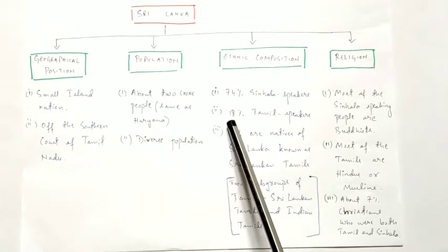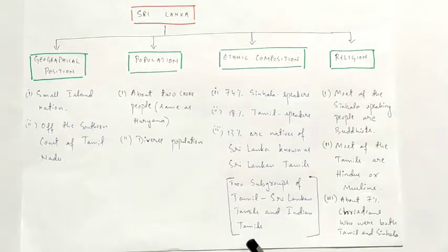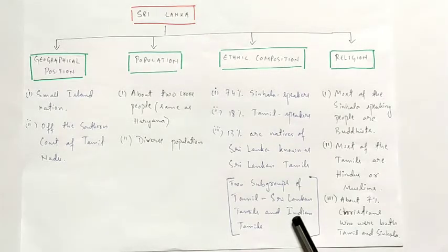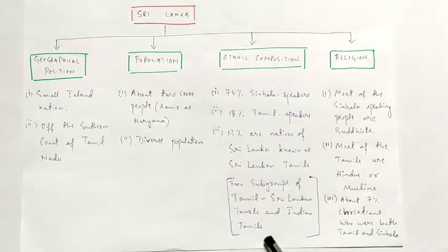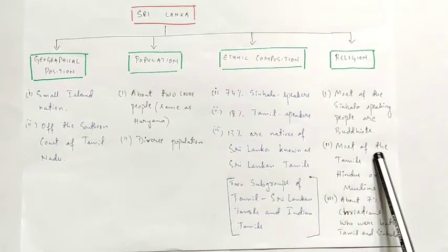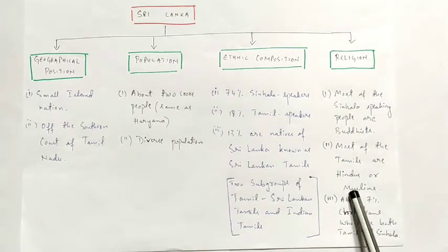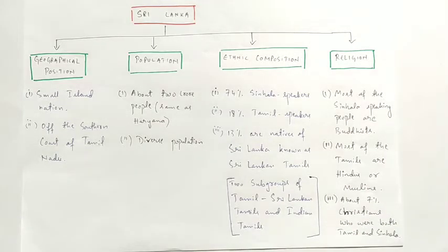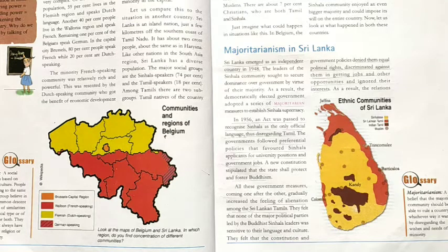Among Tamils, there are two subgroups: Sri Lankan Tamils, whose forefathers were already from Sri Lanka, and Indian Tamils, whose forefathers came from India as plantation workers during the colonial period, that is, during British rule. Regarding religion in Sri Lanka, most Sinhala speaking people are Buddhist, most Tamils are Hindus or Muslims, and about seven percent are Christians who were both Tamil and Sinhala.